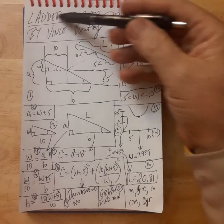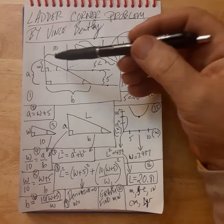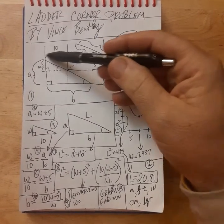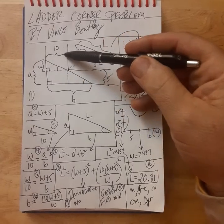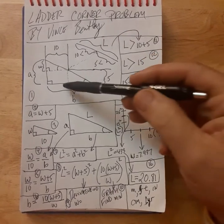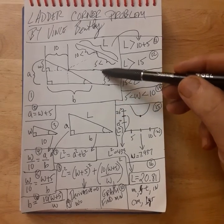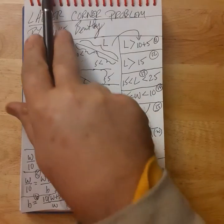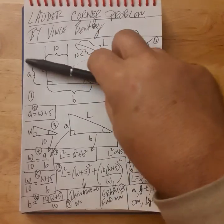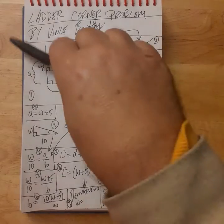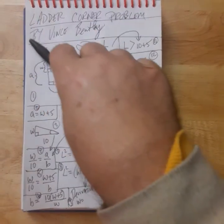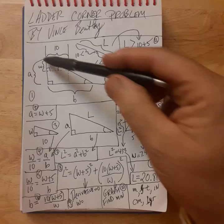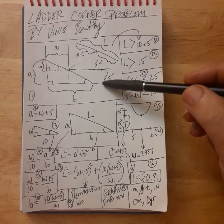Today we'll do what's called the ladder corner problem in calculus. We have a hallway that's 10 units wide, and another hallway that's 5 units wide. We want to know the longest ladder we can fit around this corner — bringing the ladder from the 10-unit hallway, around the corner, and into the 5-unit hallway.